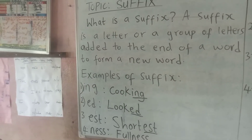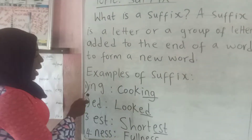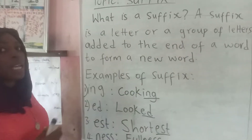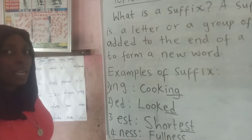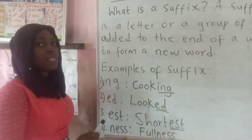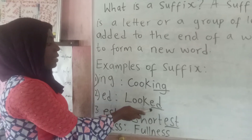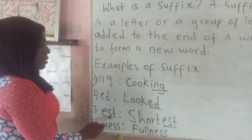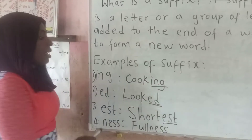Let's take examples of some of these letters that are suffixes. We have number one: 'ing'. 'ing' is a suffix because it cannot stand on its own, but it can be added at the end of a word to make another word — like 'cook'. When we add 'ing', we get 'cooking'. 'ed' — look. When we add 'ed', we get 'looked'. 'est' is another suffix. Here is 'short'. When we add 'est', we get 'shortest'.